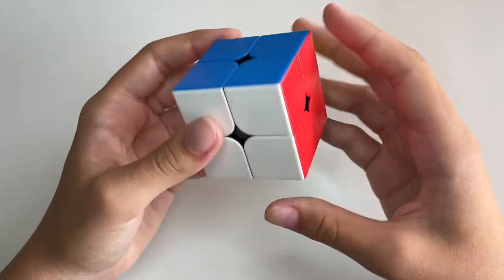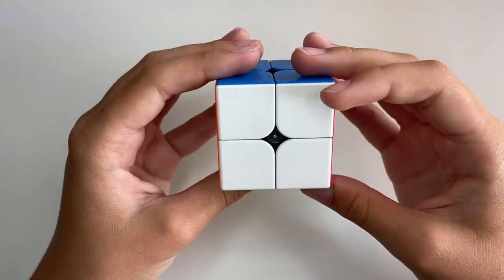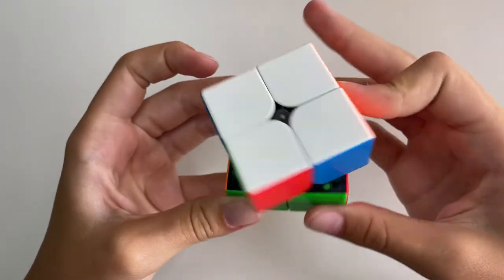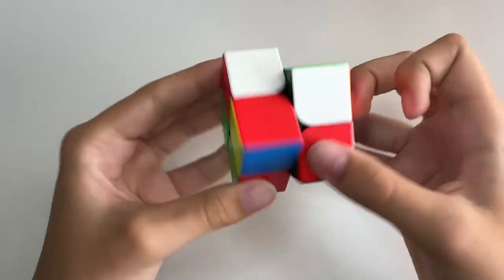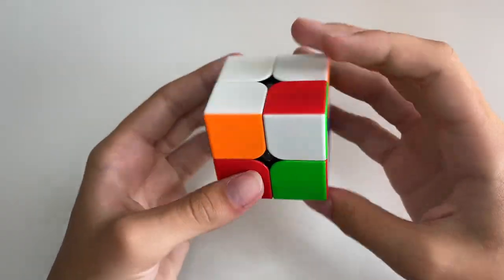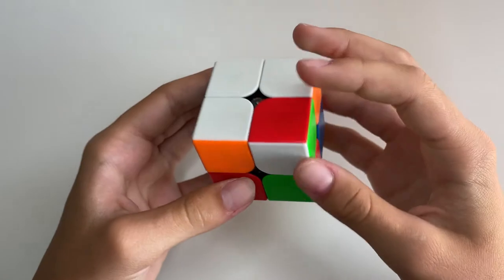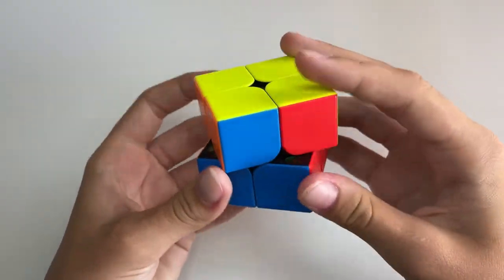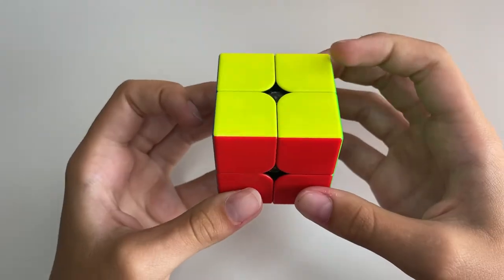And my newest 2x2 is the GAN 251M, and the logo's barely hanging on there. You can't really see it. But this, if you're a fast turner and you have pretty accurate turning, I would definitely suggest this for you. It has medium magnets. It's a classic GAN puzzle. It barely pops, and it's just really, really good all around.